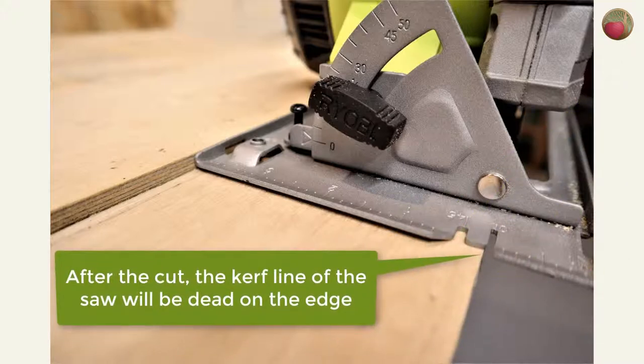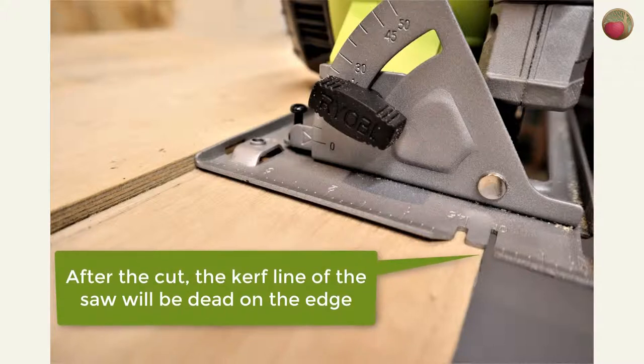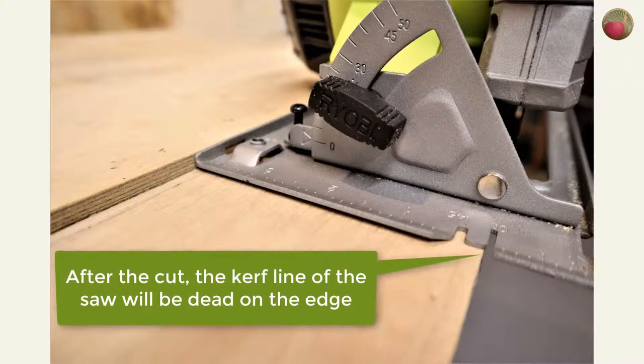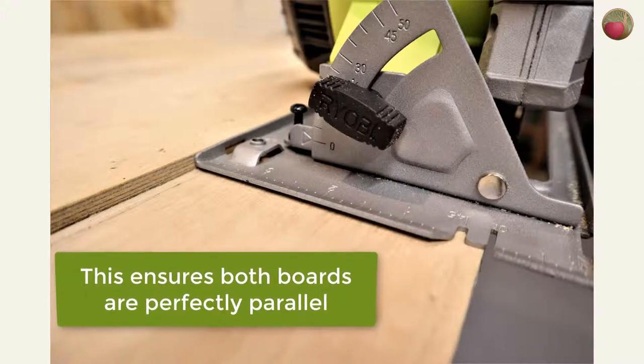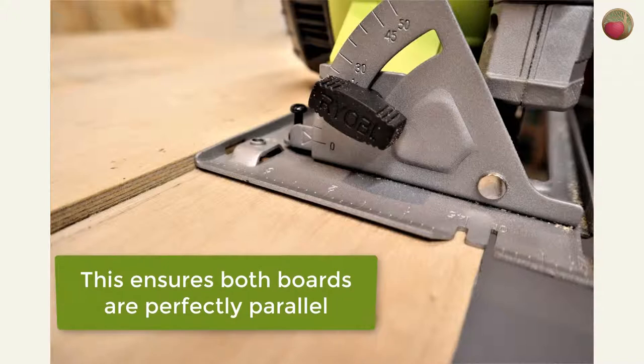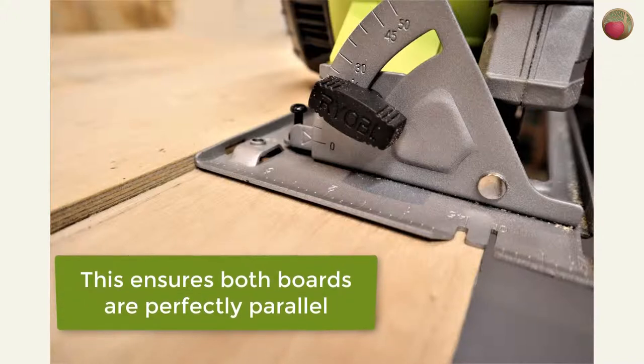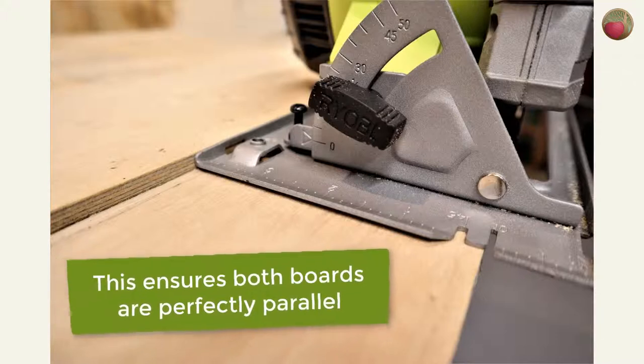Now the edge of your base board is exactly four inches or the width of your saw shoe from the factory edge of your guide board down the entire length. This method ensures that even if you didn't glue your guide board perfectly square to the base board, the edges of both are perfectly parallel and you'll always make straight cuts with it.